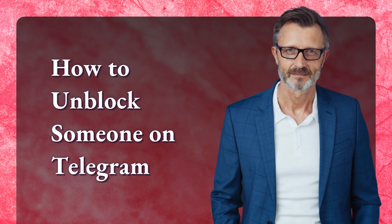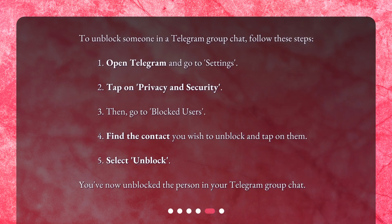How to unblock someone on Telegram? To unblock someone in a Telegram group chat, follow these steps. 1. Open Telegram and go to Settings. 2. Tap on Privacy and Security. 3. Then go to Blocked Users. 4. Find the contact you wish to unblock and tap on them. 5. Select 'Unblock.' You've now unblocked the person in your Telegram group chat.